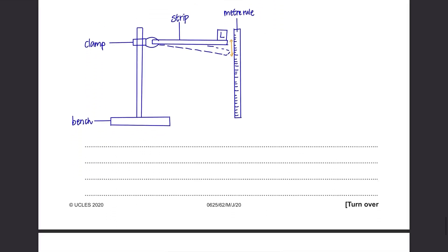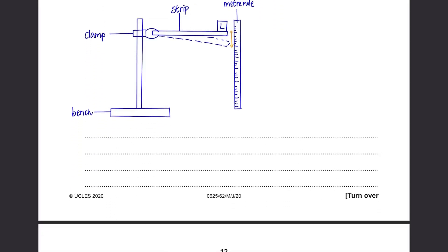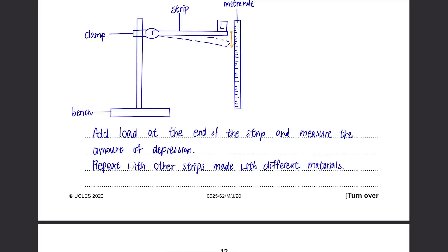Now write about the method. Add a load at the end of strip and measure the amount of depression, meaning the distance it has bent downwards because of the load. Then repeat with other strips made of different materials since we are finding the relationship between the material of a strip and the amount it's bent.